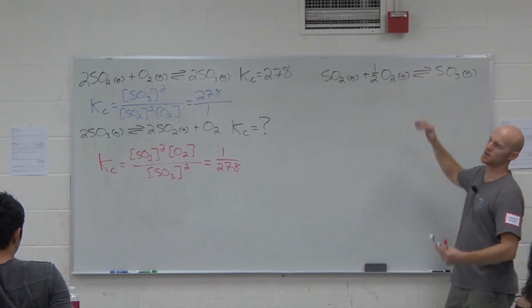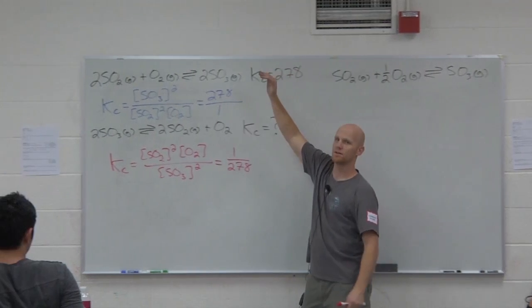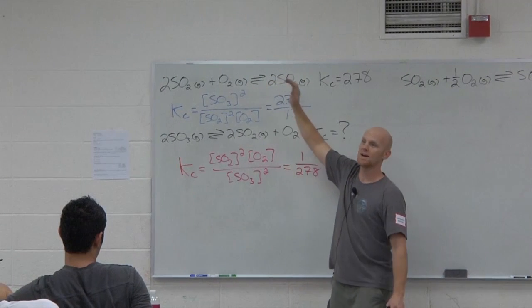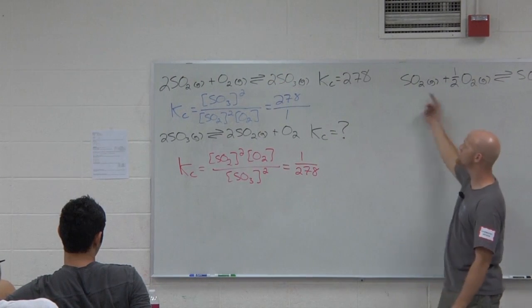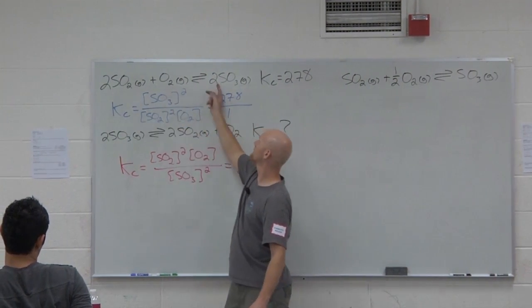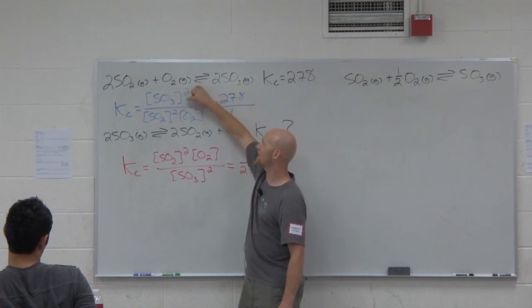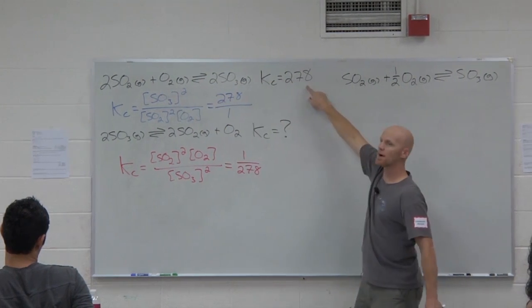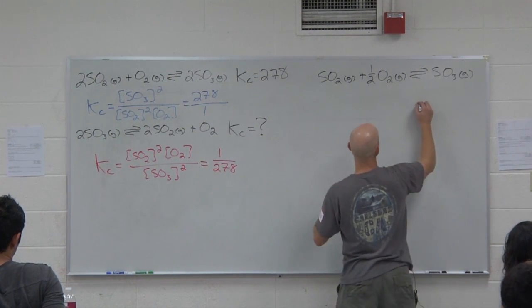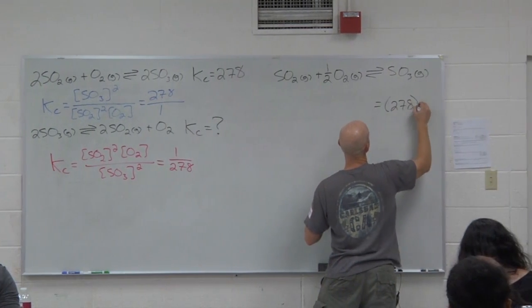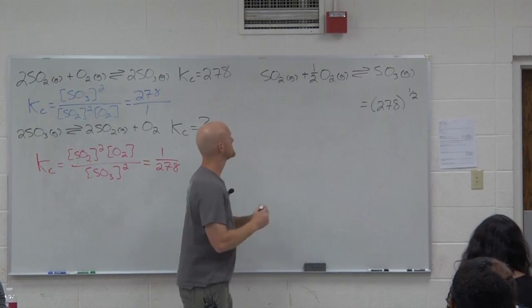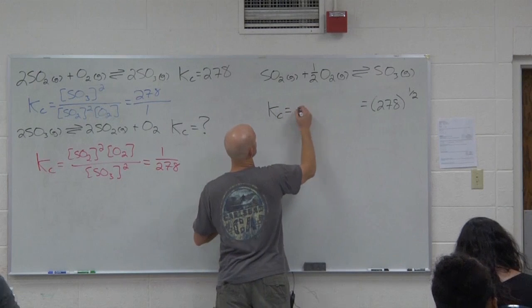So next reaction you're given is this one. How does this reaction compare to the original? Everything's cut in half. Everything's cut in half. And so a lot of students see that, and they're like, oh, so this guy's Kc should equal half of 278. But that, again, is wrong. Where do the coefficients show up in the expression? As the exponents. And so it's not that we need to multiply this by one half. We need to take it to the one half power. And so as we'll see in a minute, this Kc is going to equal 278 to the one half power. Or what's that the same as? Square root. Same as square root. So if you look here, the Kc expression is going to equal SO3 all over SO2 times O2 to the one half power.